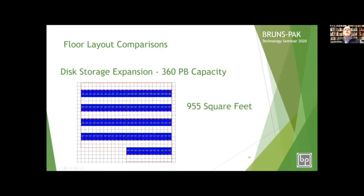For the 360 petabyte disk solution, we get into 108 racks taking up 955 square feet. Here's the layout of the equivalent disk capacity — 360 petabytes of spinning disk storage.